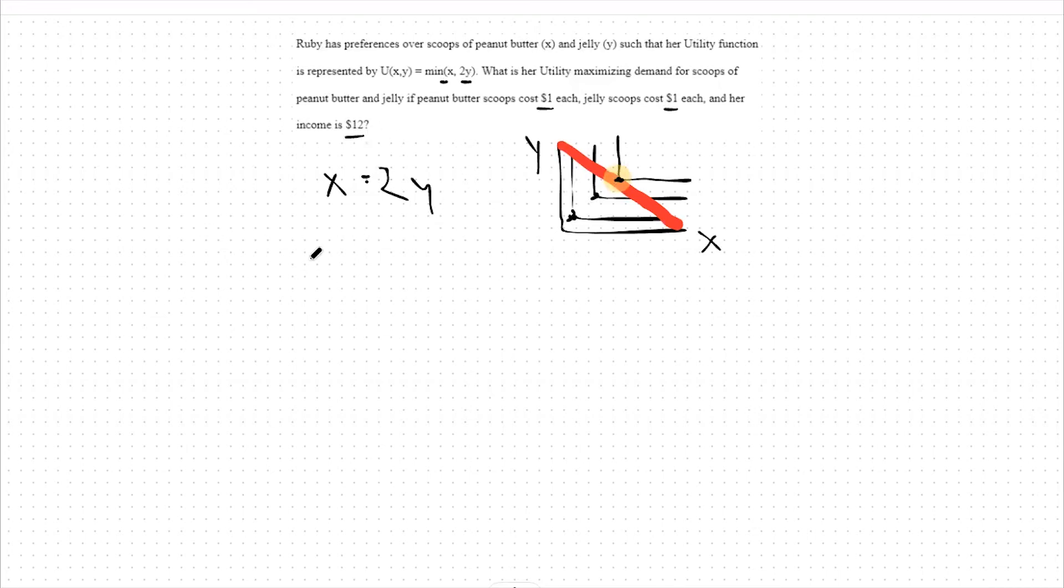So our budget constraint, or p1 x plus p2 y equals m, will be 1x plus 1y equals 12. That means x plus y equals 12.